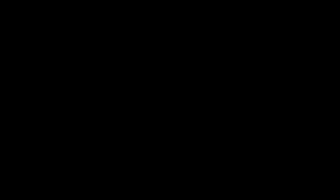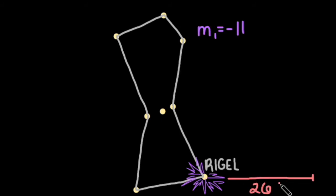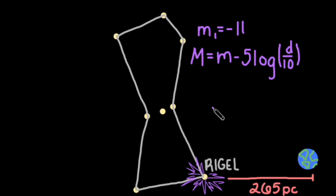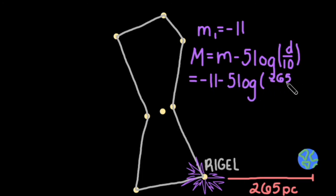Let's apply the distance modulus to the supernova explosion we mentioned earlier. Rigel is 265 parsecs away. When it sets off into a supernova with an apparent magnitude of negative 11, what absolute magnitude will the exploding Rigel have? We can rewrite the distance modulus in terms of absolute magnitude so that M equals little m minus 5 times the log of d over 10. Plugging in negative 11 and 265, we get an absolute magnitude of about negative 18 for that supernova explosion.